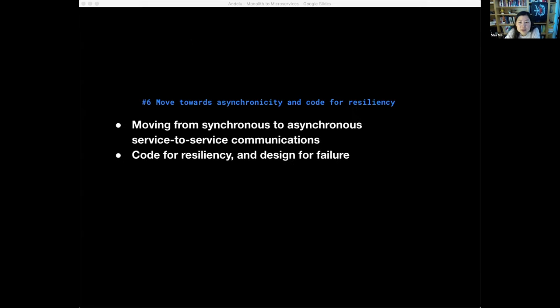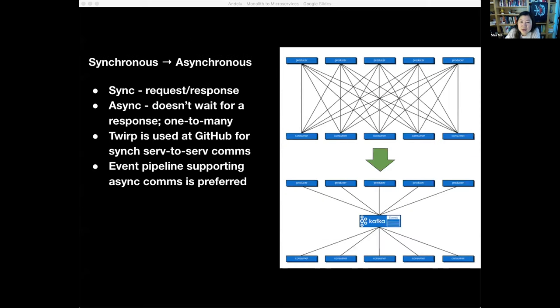Going from monolith to microservices is a major paradigm shift. Both the software development process and the actual code base will look significantly different going through this transition. So to wrap up this talk, we'll quickly cover service-to-service communications and designing for failure, both of which are important concepts in distributed systems and microservices development. There are two ways that services communicate with one another, synchronously and asynchronously. With synchronous communications, the client sends a request and waits for a response from the server. With asynchronous communications, the client sends a message without waiting for a response. And each message can be processed by multiple receivers. As mentioned earlier, we use Torp at GitHub to enable synchronous communications between monolith and core services outside of the monolith-like authorization.